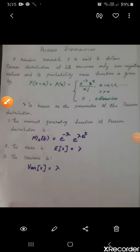Students, in unit 1 of PQT, we have 6 types of distributions. The first one is binomial distribution and the second one is Poisson distribution.